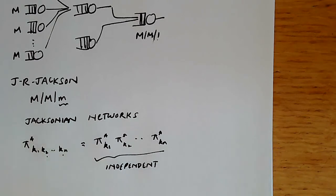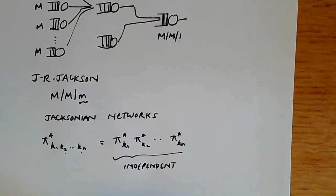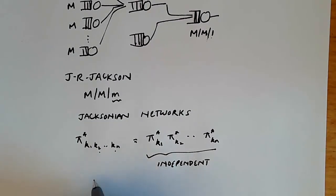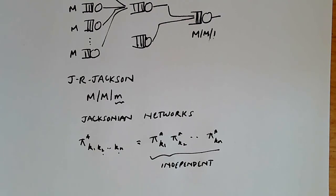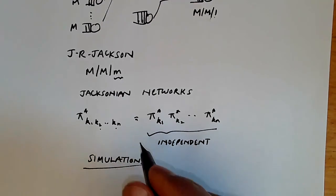But in practice actually we find that the arrivals are not Poisson, and services are not exponentially distributed either. For these reasons we actually cannot use Jacksonian networks and analysis. Instead what we end up having to do is to use simulations, and we will therefore start discussing simulations of stochastic processes next in this course.